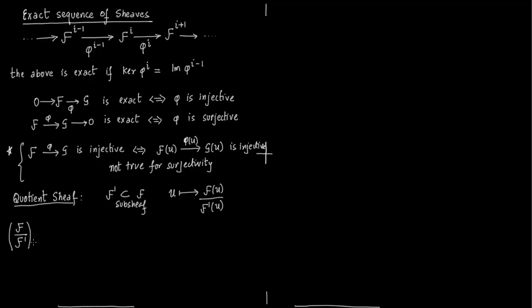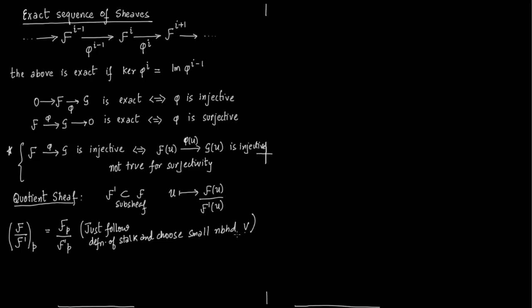In particular, notice that if you localize this group F(U) modulo F′(U), this equals the stalk over stalk: F_p / F′_p. You can prove this easily because when you take a direct limit around a point p, you always talk about a small neighborhood V. By definition you take V to F(V) / F′(V), and if V is small enough, the stalk equals F(V) for some small neighborhood V around p. It just follows from the definition of stalk — choose a small neighborhood V.